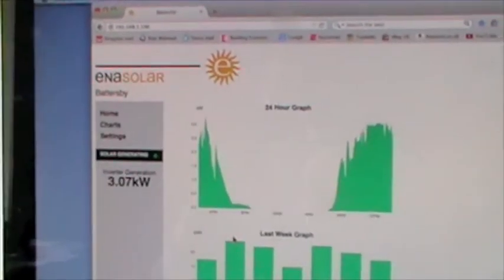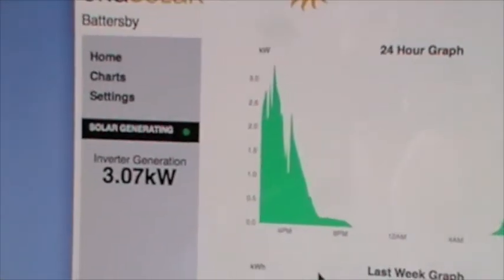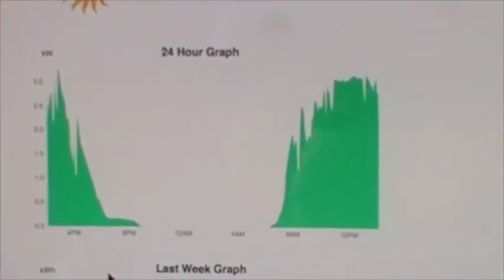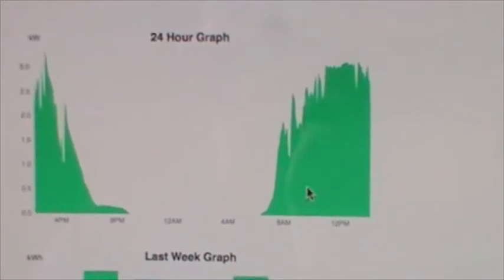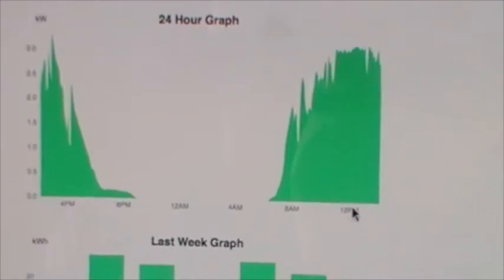It takes a moment to come up but there it shows us that at the moment we're producing 3.07 kilowatts which is over three quarters of its maximum capacity. And this is today's output. It's been quite a sunny day today so we've got quite a good output.